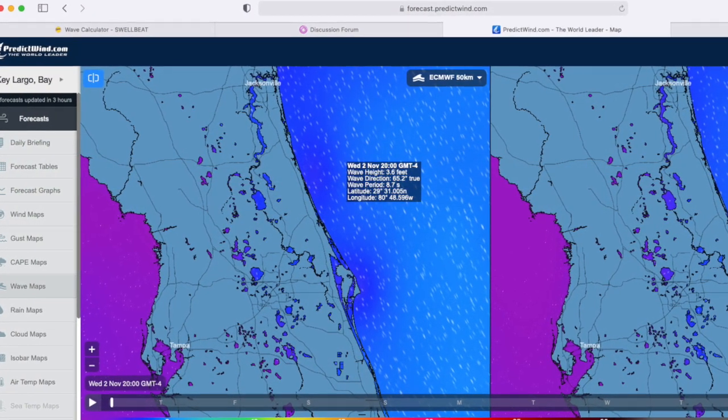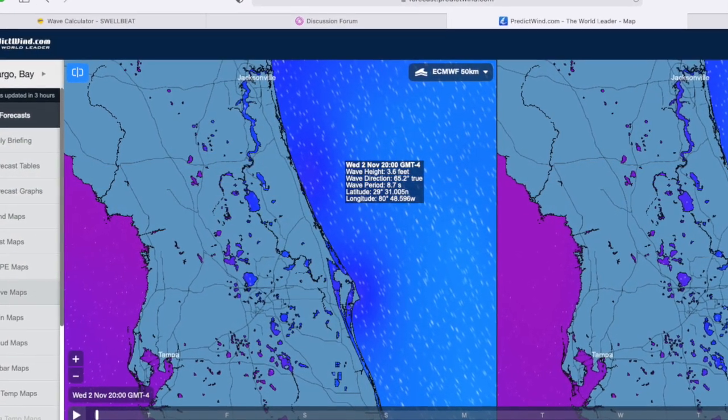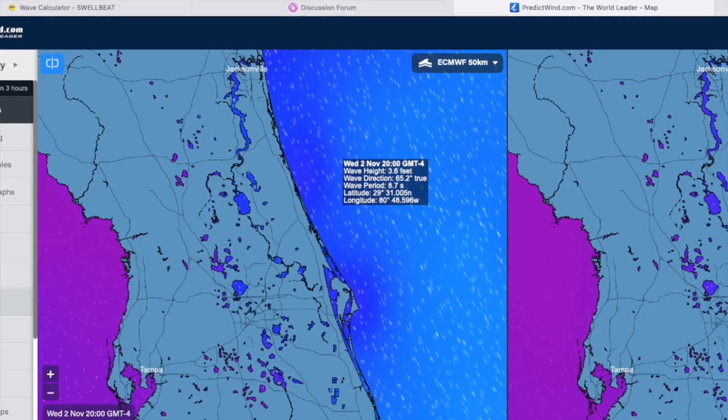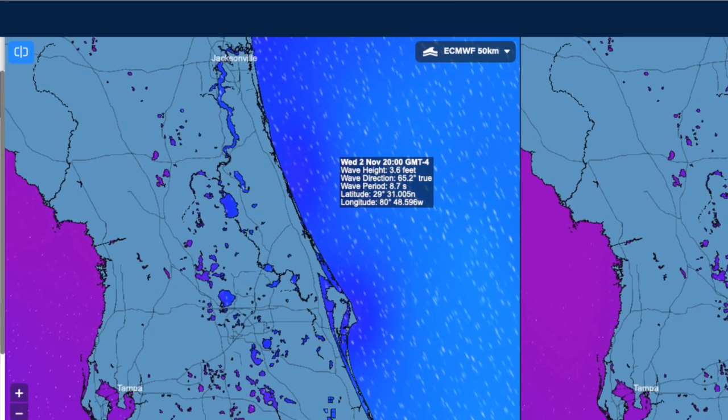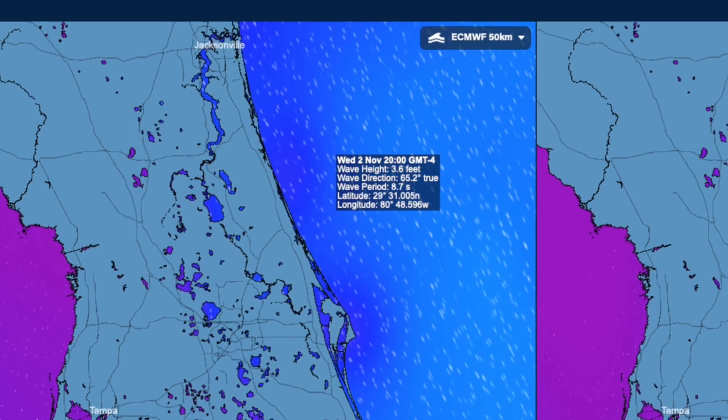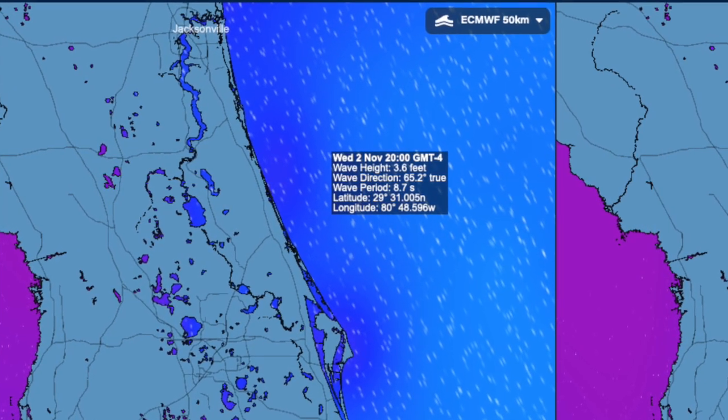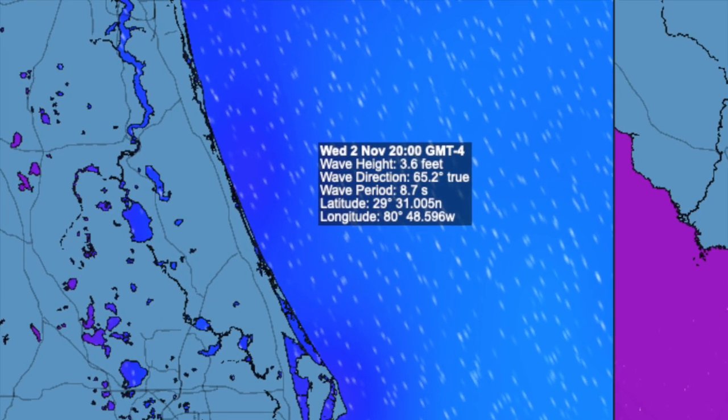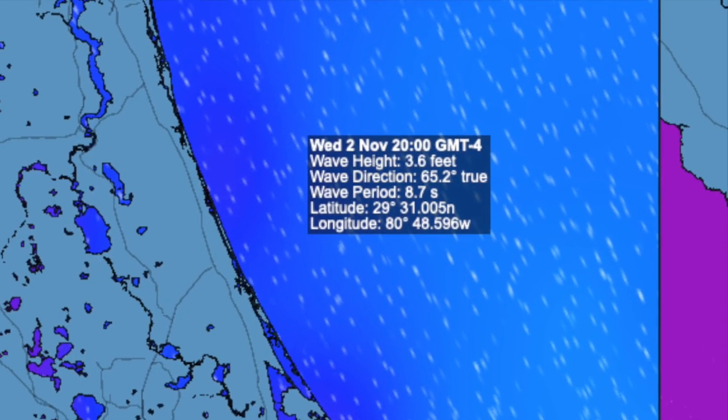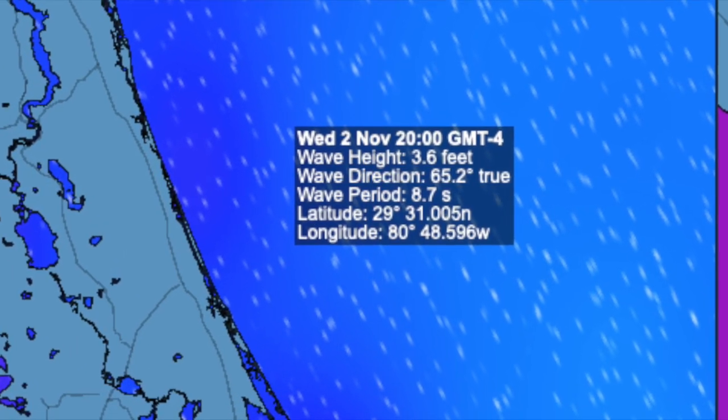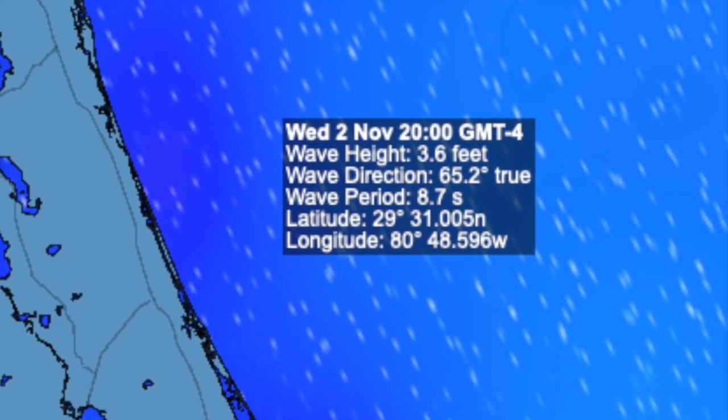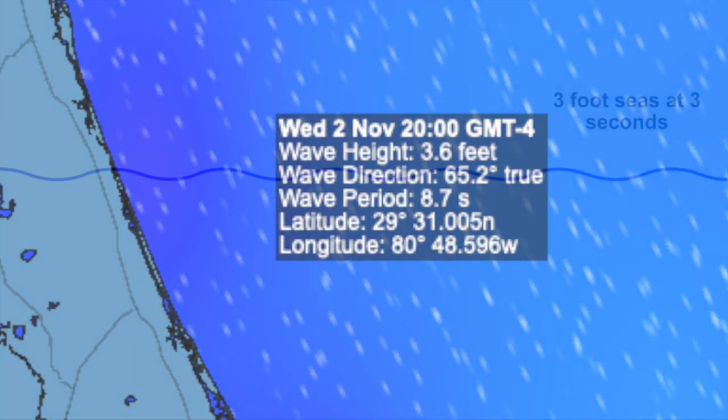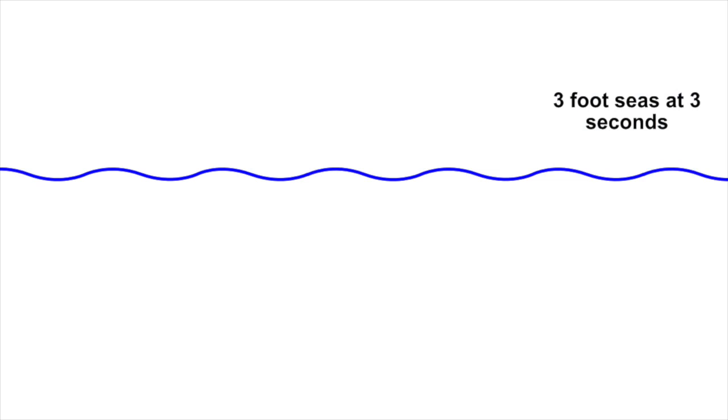The first thing we need for our comfort calculations is some data and I'm going to get that from predictwind.com which is my preferred weather source. I prefer it because it has three forecast models that provide wave height, wave period and wave direction. All three of these data types are super important for us to do our calculations. For the examples going forward I'm going to use 3 feet or 1 meter for all the calculations.